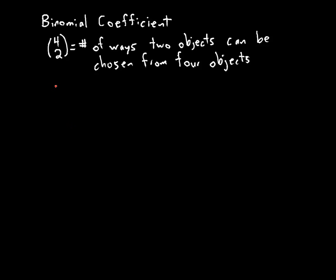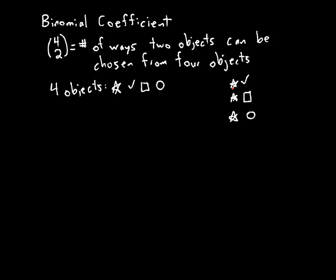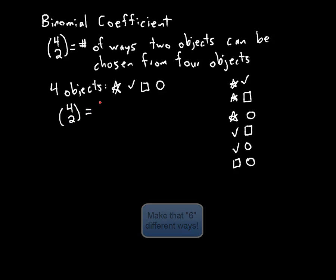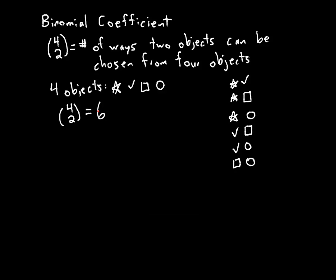Suppose I have four objects — I'll denote these by a star, a checkmark, a square, and a circle. 4 Choose 2 is the number of ways I can choose two of these objects, and order is not going to matter. I could choose the star and the checkmark, the star and the square, or the star and the circle — that's all choices including the star. Or the checkmark and the square, the checkmark and the circle, or the square and the circle. That's really all the possibilities, so 4 Choose 2 is six.